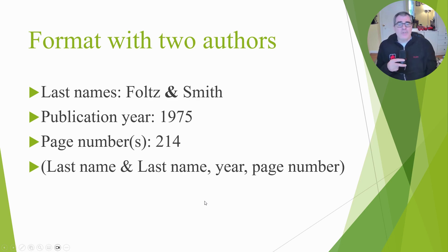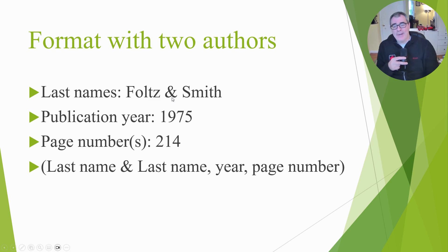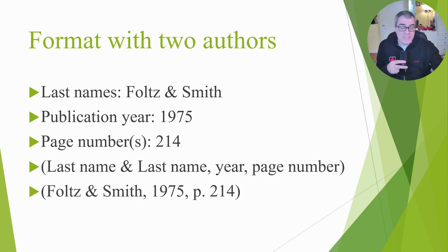So what do you do if you have two authors? For two authors, you're still going to need the publication year and the page number, same thing. But in this case, you're going to need both authors' last names. Notice that there's an ampersand that separates the two authors' names. For our hypothetical example, it's Foltz and Smith. The template is very similar — the names, the year, and the page numbers — except you have an ampersand separating the two. I put this in bold to highlight it, not because it should be bold in your actual paper. So it should look like this: Foltz & Smith, 1975, comma, p., and then the page number.